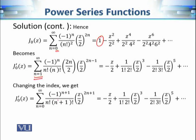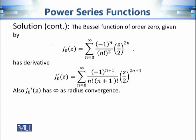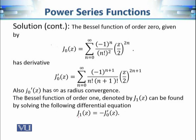To shift the index back to n equals 0, we replace n with n + 1 throughout. This means each n becomes n + 1, and after simplification we obtain the general formula for the first derivative of J₀. One can verify that this new function also has radius of convergence equal to infinity. Using this derivative, we can define the next Bessel function: J₁ equals minus J₀ prime of z. This illustrates how term-by-term differentiation of power series allows us to define and relate Bessel functions.